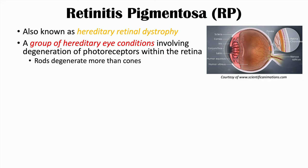It's important to note that the degeneration of the photoreceptors is more likely to affect rods more than cones. So rods will degenerate more than cones, which means this condition will affect night vision more often, especially at earlier stages. The degeneration of photoreceptors responsible for vision will slowly and progressively worsen over time, leading to progressive vision loss.